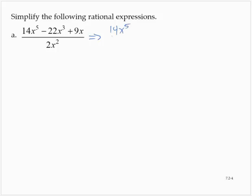So we'd have 14x to the fifth over 2x squared minus 22x to the third over 2x squared plus 9x over 2x squared.